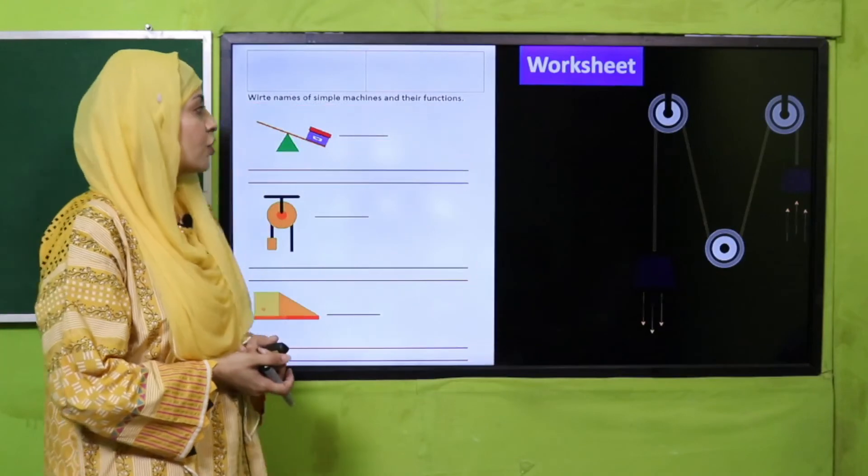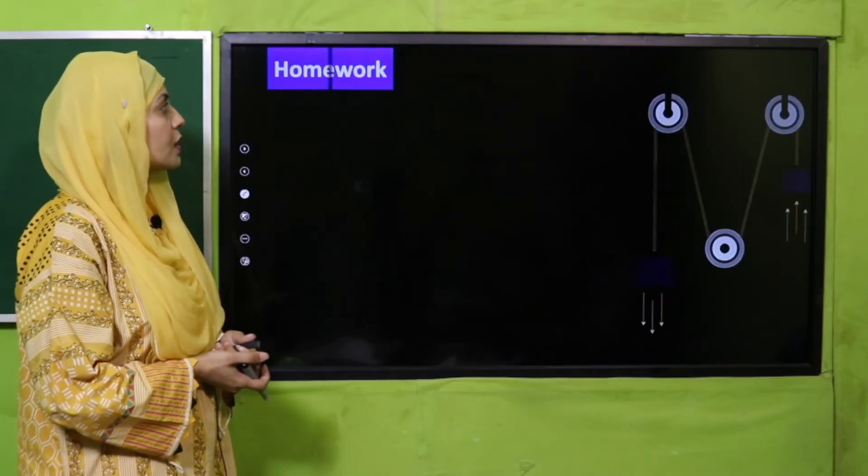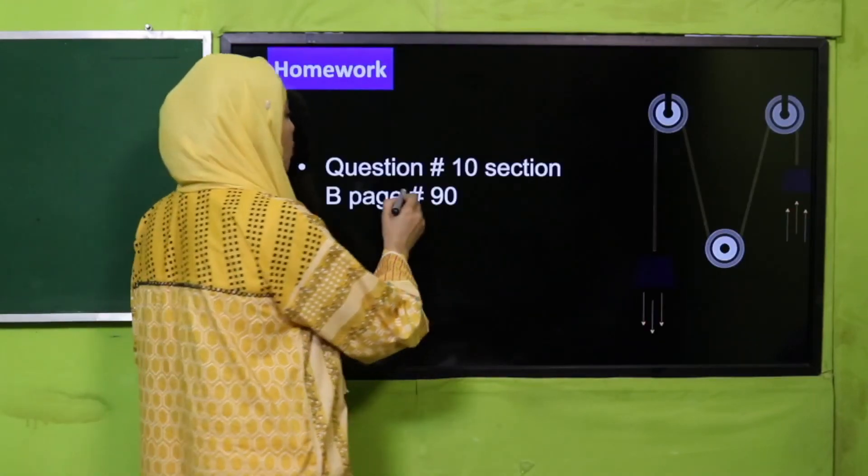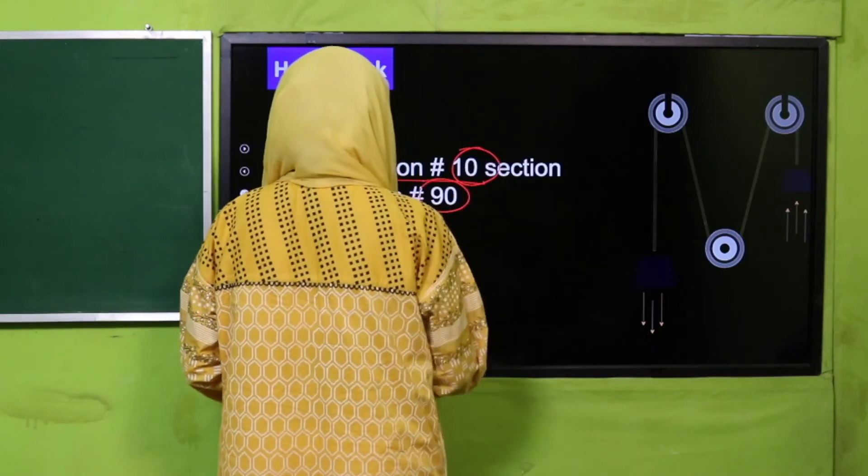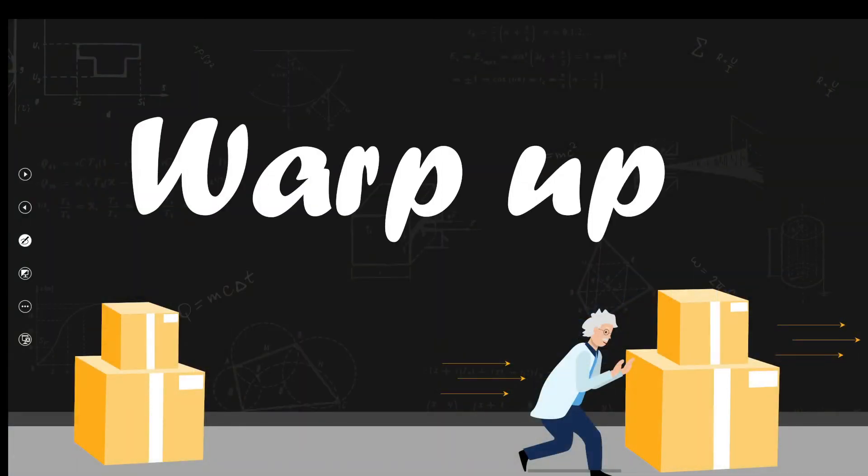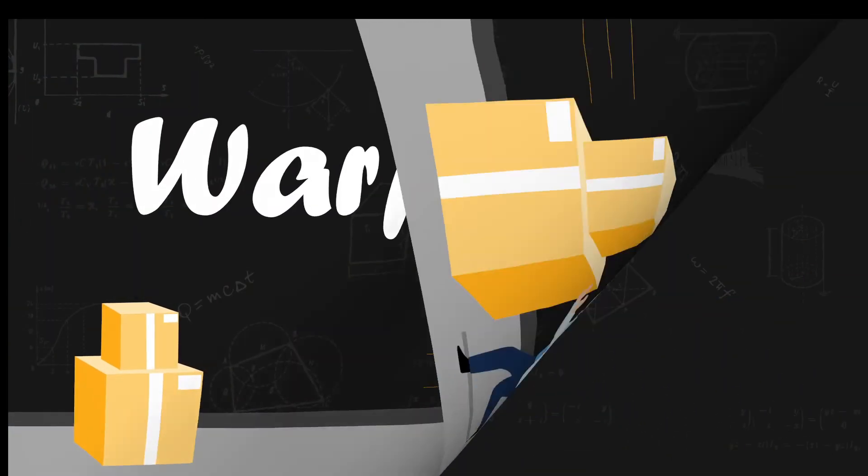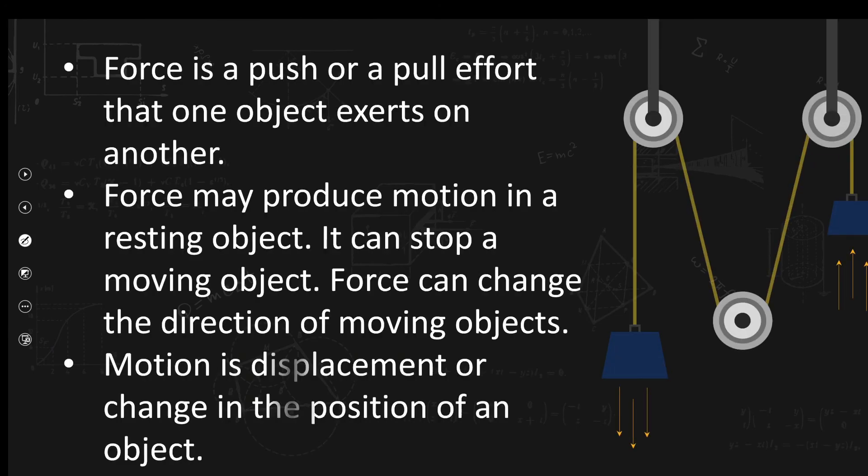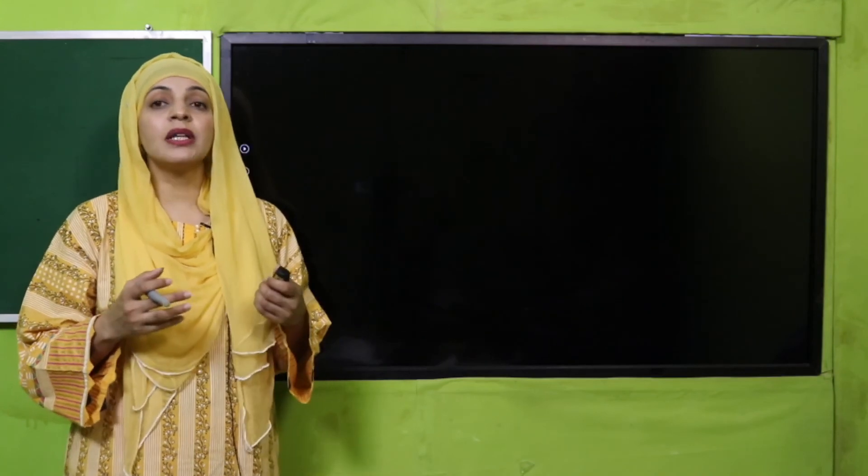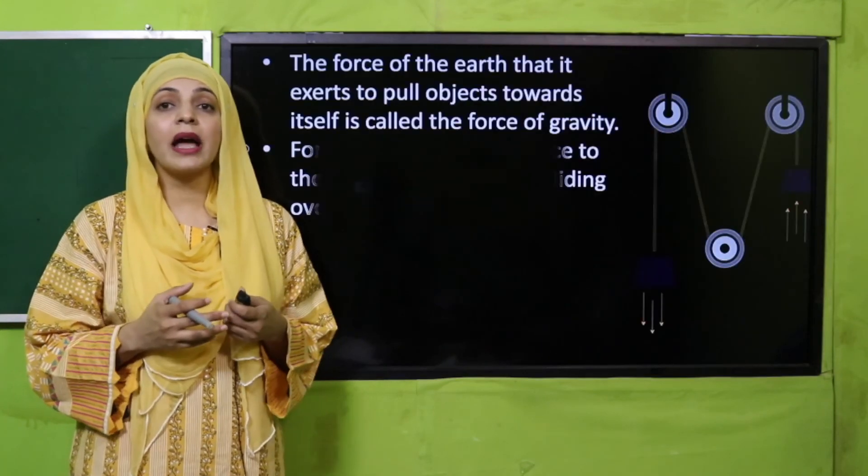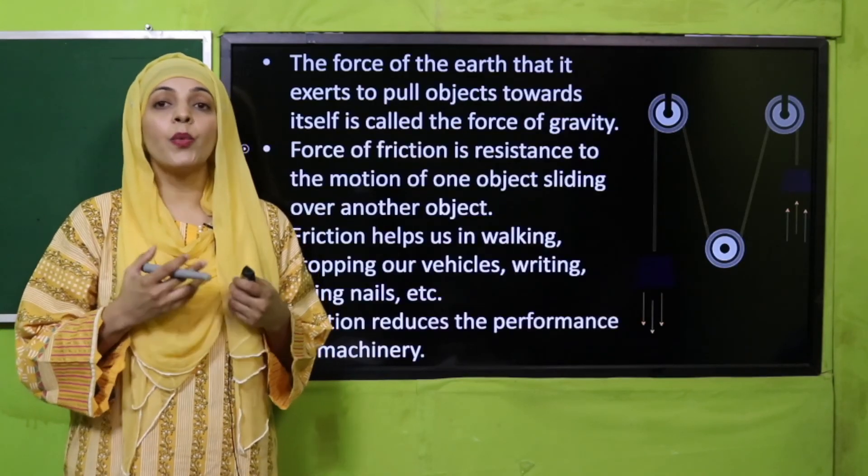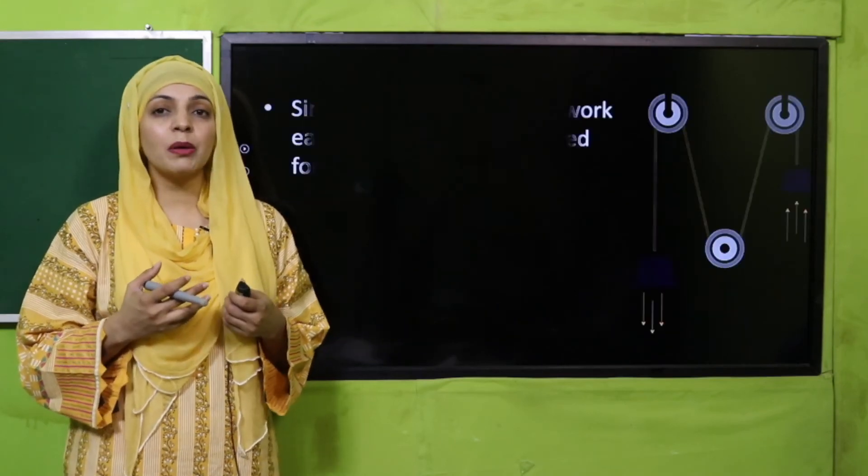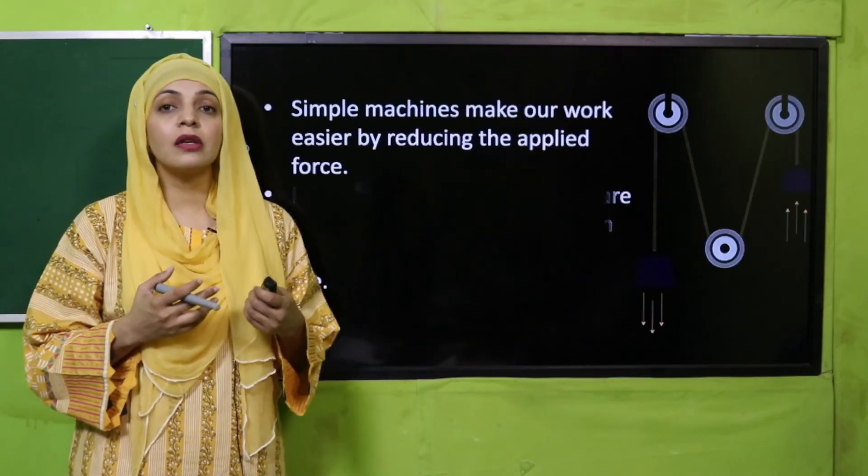I hope everybody has done the worksheet. Now let's quickly move forward towards the homework. For homework you will do question number ten given on page number ninety and the wrap-up of the chapter. My dear students, in this we learned about force and motion, then we discussed force of gravity, we discussed frictional force, we discussed advantages and disadvantages of friction, and we also discussed many simple machines like lever, pulley, gears, and ramps.